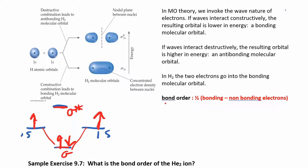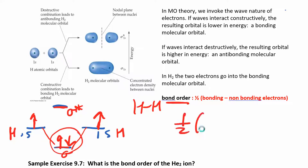We can then calculate the bond order. Think of a hydrogen atom with a 1s electron bonding to another hydrogen atom with a 1s electron — you know from the Lewis structure it's a single bond. The bond order is one-half of the number of bonding electrons minus the non-bonding electrons. I have two electrons in bonding orbitals and none in antibonding orbitals, so it's one-half of (2 minus 0), which equals one — a single bond.